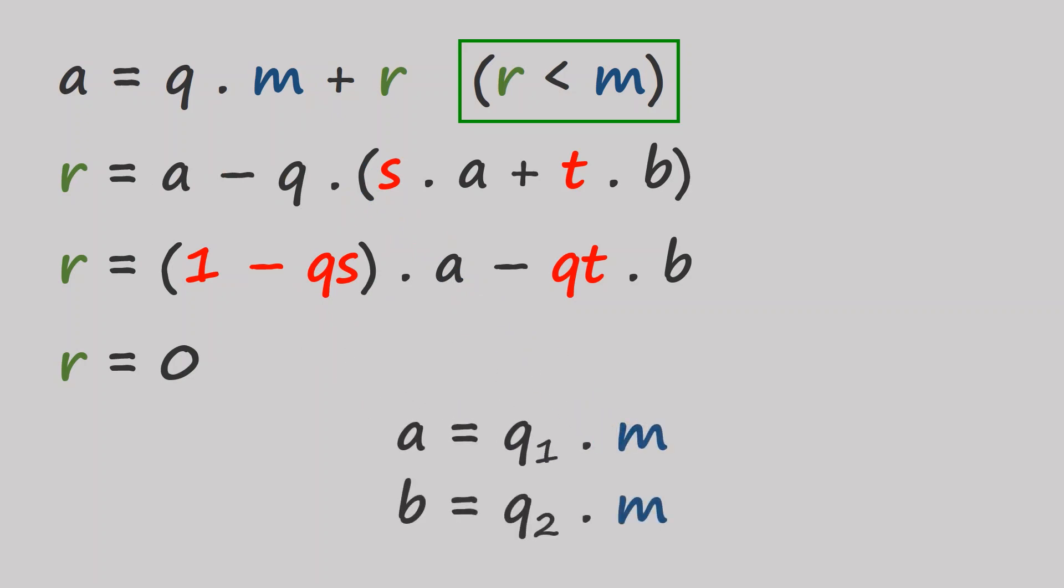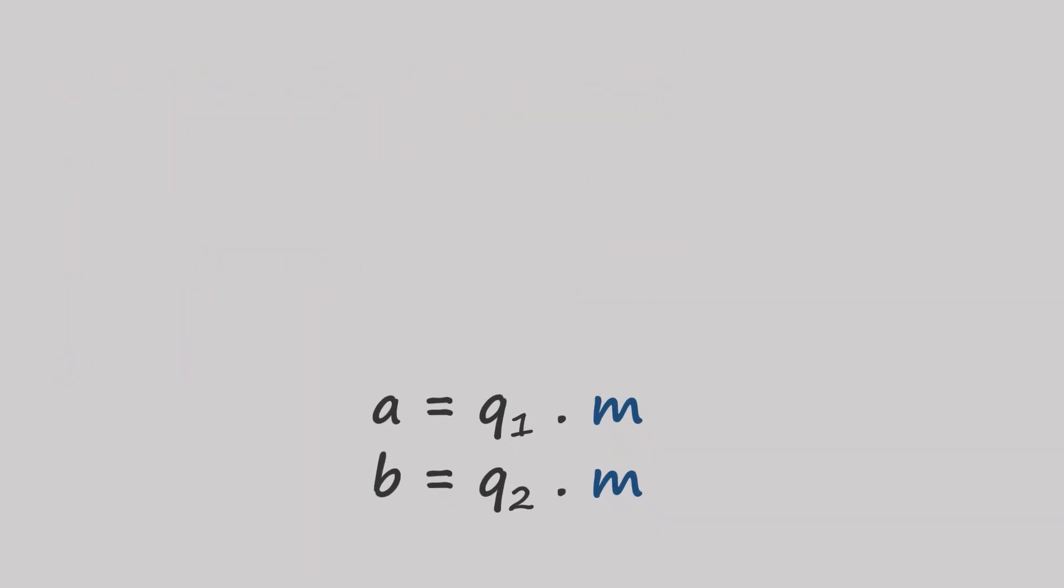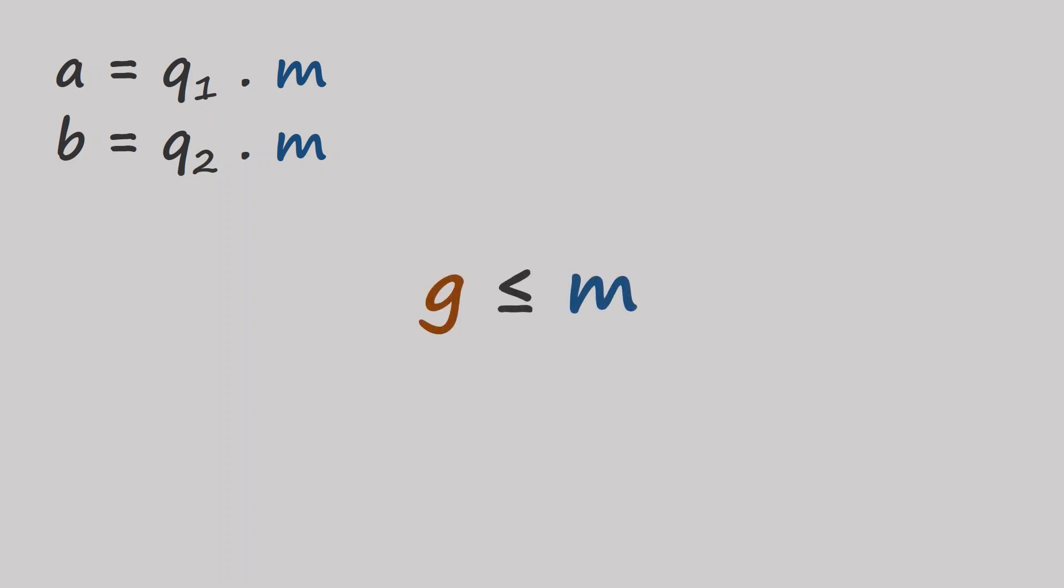So we now know that m is a common divisor of a and b. But is it the greatest common divisor? We saw earlier that m has to be greater than or equal to g. And there is no common divisor greater than the greatest common divisor. This means that m is in fact equal to g. And the greatest common divisor of any two integers is their smallest linear combination.